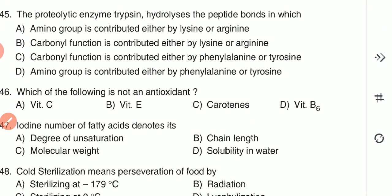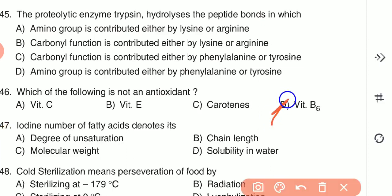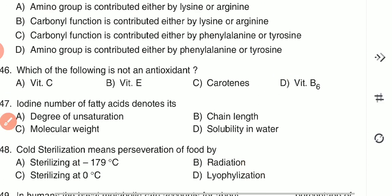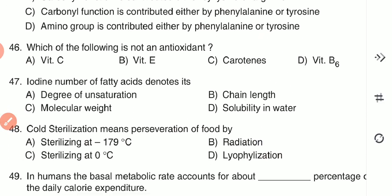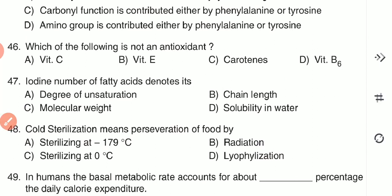Question 46: Which of the following is not an antioxidant? (A) Vitamin C, (B) Vitamin E, (C) carotenes, or (D) Vitamin B6. Vitamin B6 is not an antioxidant — option D is the correct answer. Question 47: The iodine number of fatty acids denotes — (A) degree of unsaturation, (B) chain length, (C) molecular weight, or (D) solubility in water. The iodine number denotes degree of unsaturation — option A.